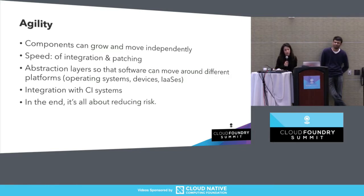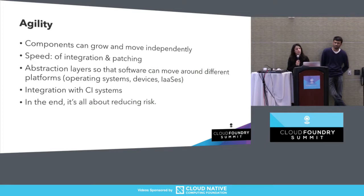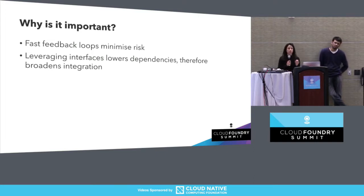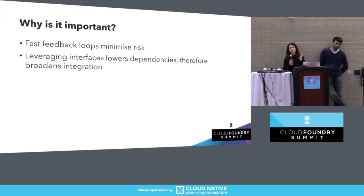As long as software implements the agreed interface, it can move freely. Integration with CI systems is also an implementation of agility, as is anything that removes delays or reduces risk. Agility is important because fast feedback loops mean lower risk — the smaller things you can ship, and the more frequently you ship them, the less likely you are to invest strongly in the wrong direction.